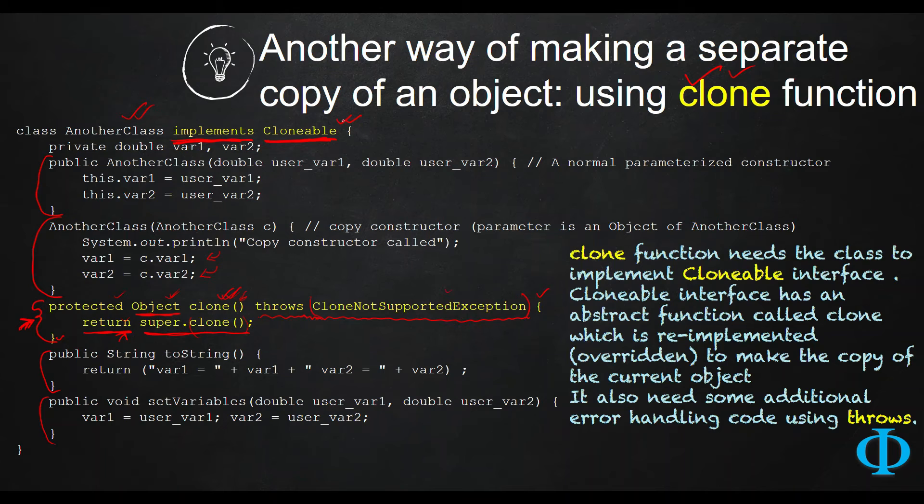By making use of an interface and then overriding its abstract function and all these things - well, it has several advantages. One of them is you can achieve a field-by-field copy and make a separate replica of the object just by one single line of code.